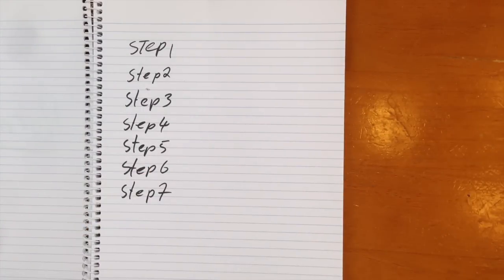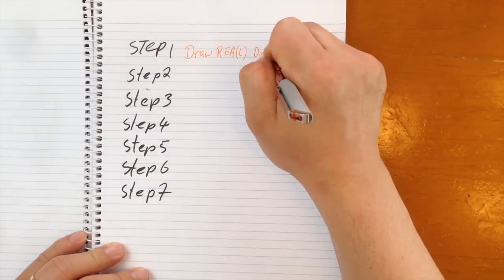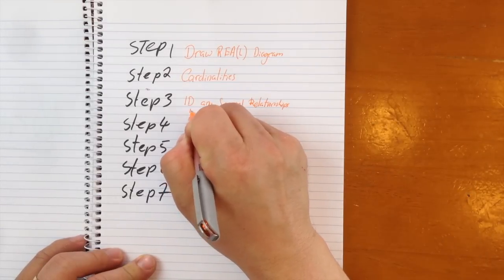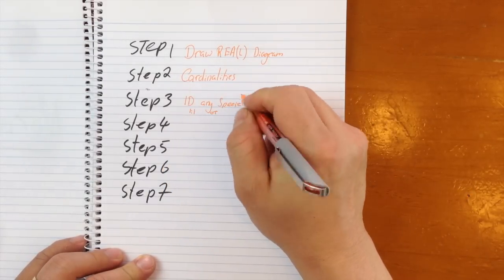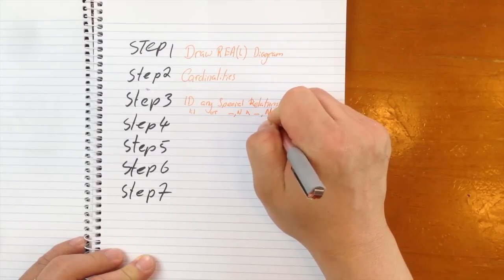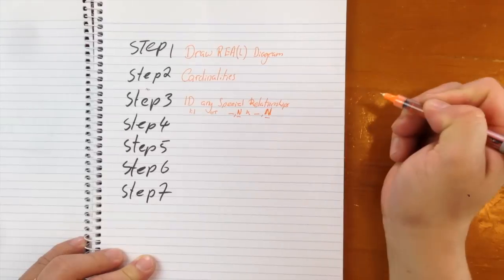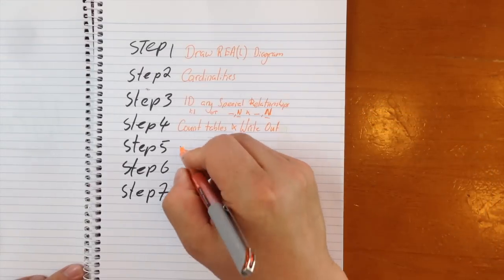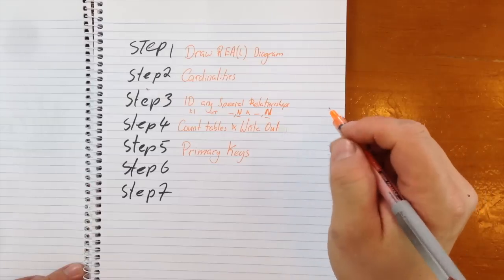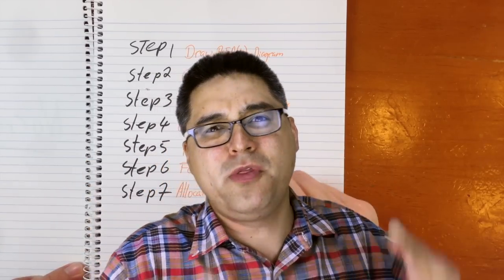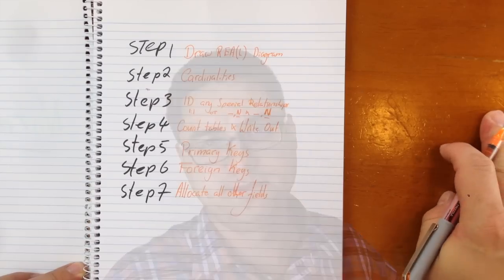My sneaky cheating way basically depends on seven major steps. Step one is to draw the REA or the real diagram. Step two is to do the cardinalities. Step three is to identify any special relationships — these can be a one-to-one relationship or a many-to-many relationship, where the many side is the maximum on both sides. Next is to count the number of tables and write those out. Step five is to identify and allocate any primary keys. Step six is to allocate any foreign keys. And step seven is to allocate all other fields. These steps are easy to understand and most of the time they'll get you to the right answer.